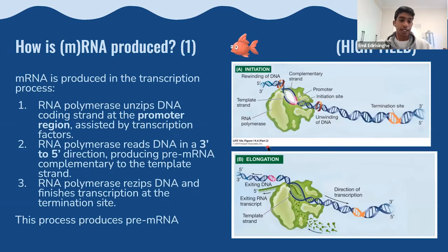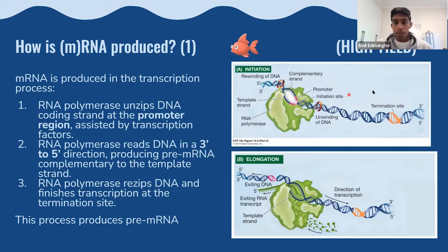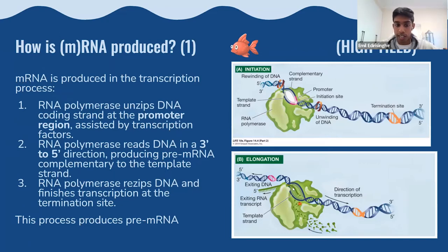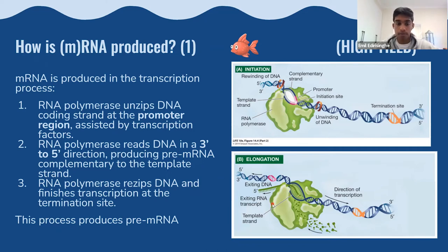The production of mRNA is the first part of the transcription process. RNA polymerase unzips DNA at the coding strand at the promoter region, assisted by transcription factors. RNA polymerase reads DNA in a three prime to five prime direction and produces a pre-mRNA complementary to the template strand. There is no need for primer regions or DNA helicase — RNA polymerase does all the work and produces pre-mRNA.